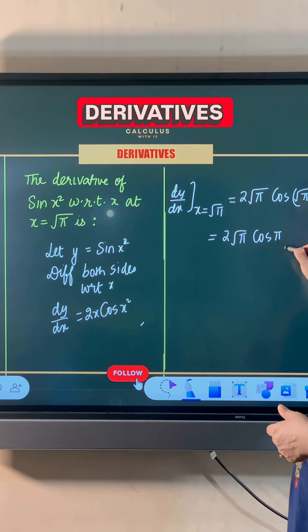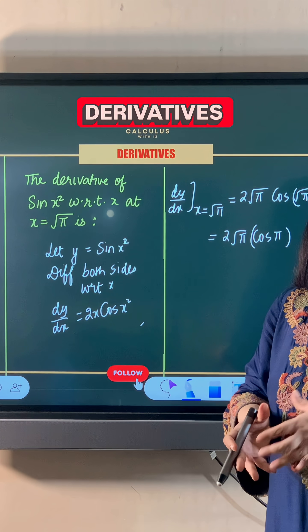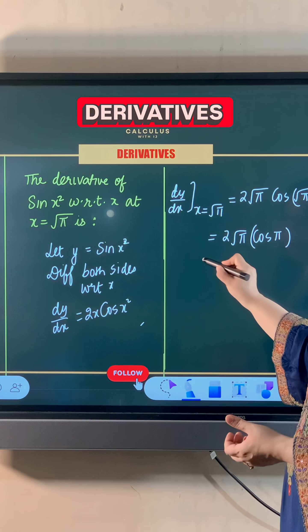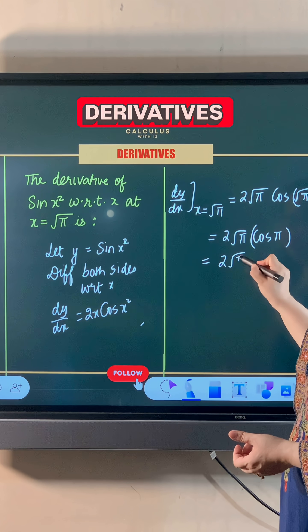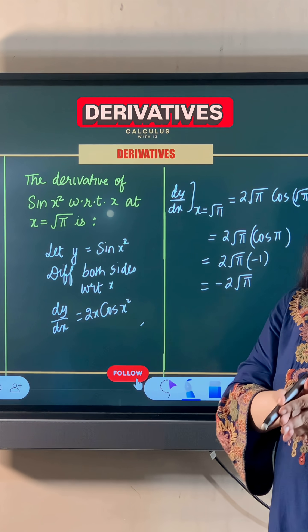Now the value of cos π—π is 180 degrees—is -1. So this becomes 2√π multiplied by -1. The final answer is -2√π.